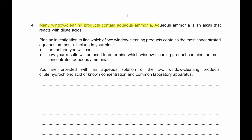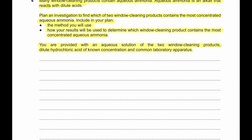Question 4: Many window cleaning products contain aqueous ammonia, which is an alkali that reacts with dilute acid. Plan an investigation to find out which of two window cleaning products contains the most concentrated aqueous ammonia. Take equal volumes (25 cm³) of each cleaner measured with a pipette, add methyl orange indicator, then titrate with hydrochloric acid of known concentration from a burette until the indicator changes color. Record the volume of acid used — the more concentrated cleaner will require more acid to neutralize.